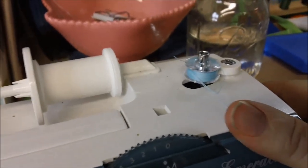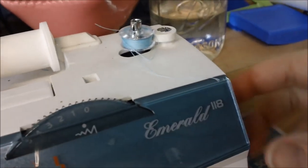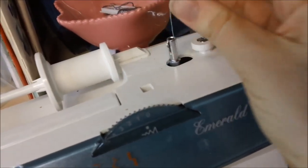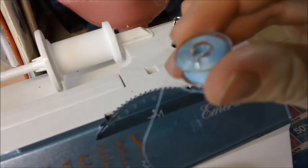There we go. That's how to thread a bobbin. And when you are done you want to make sure you push in the knob and push this over to pull it up and you've got your bobbin threaded.